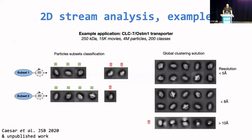This is an example of the 2D stream — a 250 kilodalton membrane transporter, twofold symmetric. Here you see what has been rejected in the first subset and then the second subset. This is the global solution with a lot of classes resolved below 5 Å resolution, lots of classes at intermediate resolution, and then some junk in the global solution as well.